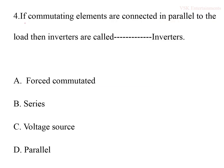The fourth question: if commutating elements are connected in parallel to the load, then the inverters are called dash inverters. Options are forced commutated inverters, series inverters, voltage source inverters, and parallel inverters. Commutating elements (inductors and capacitors) connected in parallel to the load — those types of inverters are called parallel inverters. So option D is the correct answer.